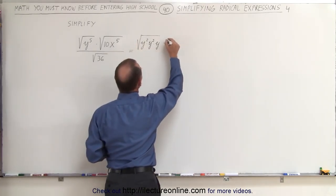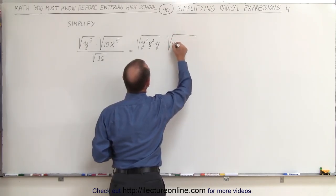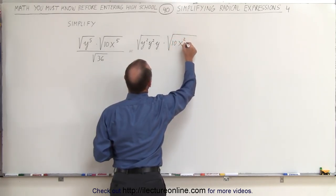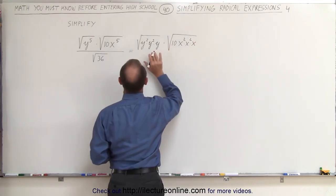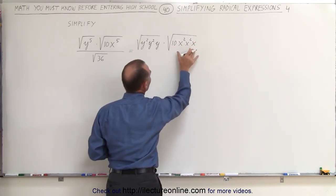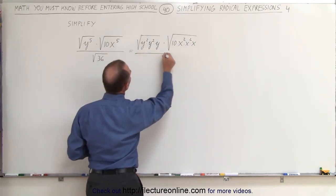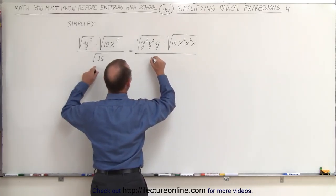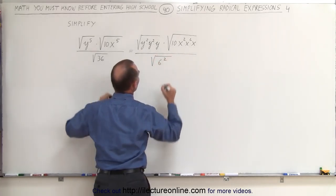Here we can write that times the square root of 10 times x squared times x squared times x. Just like we did for y to the fifth, we can write x to the fifth like that. In the denominator, the square root of 36 can be written as the square root of 6 squared.